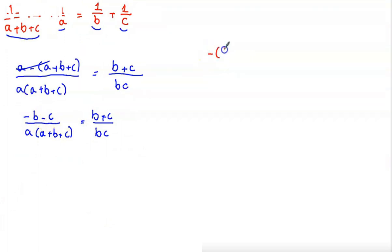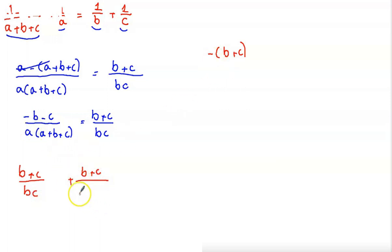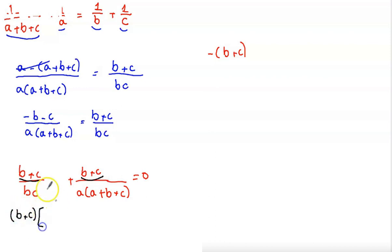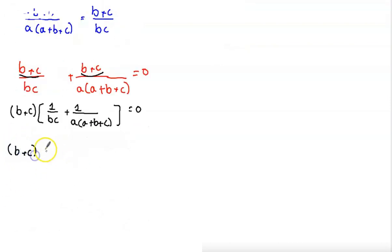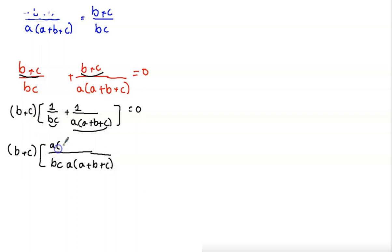Note that −b − c = −(b+c). Taking all terms to one side gives (b+c)/bc + (b+c)/[a(a+b+c)] = 0. We can take (b+c) as a common factor, so (b+c) × [1/bc + 1/(a(a+b+c))] = 0. The LCM of bc and a(a+b+c) is bc·a(a+b+c), giving (b+c) × [a(a+b+c) + bc] / [bc·a(a+b+c)] = 0.